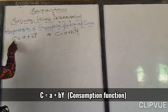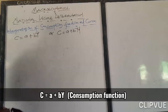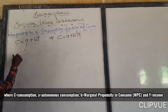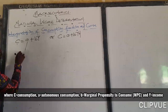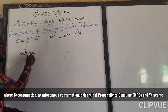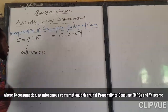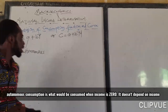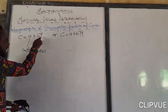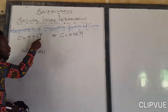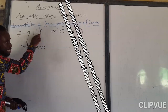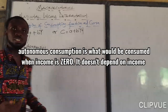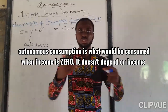Now we have C equal to A plus BY. Consumption is equal to A. This A is called Autonomous Consumption. The Autonomous Consumption is what will be consumed when income is equal to zero. If income is zero, B times zero will be zero, so it will be C equal to A. So the Autonomous Consumption is what will be consumed when income is equal to zero.